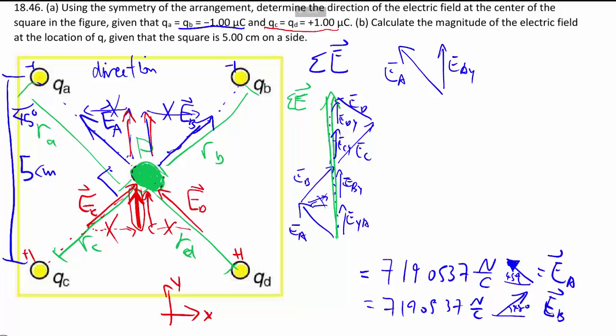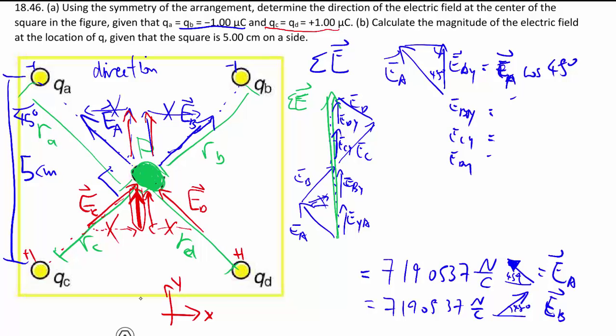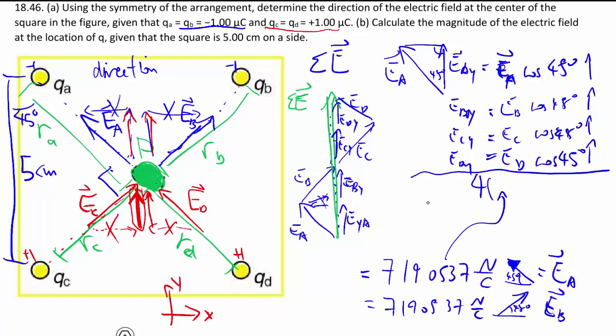How big is Eay? Well, we know that there's a 45 degrees there, so Eay must be Ea cosine 45 degrees. And similarly, Eby, Ecy, Edy is Eb cosine 45, Ec cosine 45, Ed cosine 45. You can see that they're all the same and they all go up. So when you add them all up, that's just four times whatever your Ea is, the size of Ea, times cosine 45 degrees, still going up.